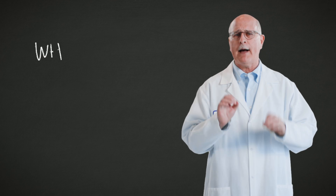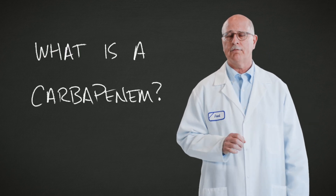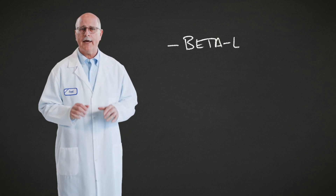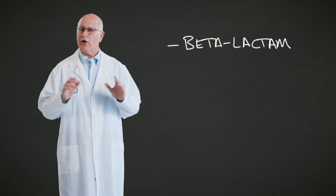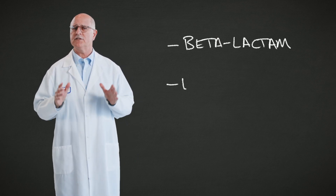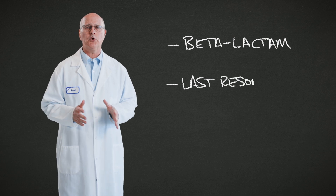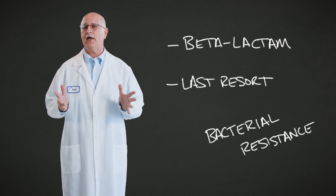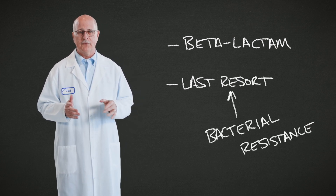But first, we need to discuss a very important and very powerful class of antibiotics: the carbapenems. Carbapenems are beta-lactam type drugs and they're often the drugs of last resort when other antibiotics have failed due to bacterial resistance.